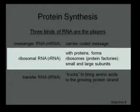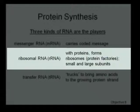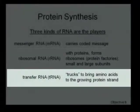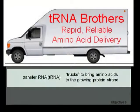Ribosomal RNA, or rRNA, gathers together with proteins to form macromolecular assemblies called ribosomes — those are little protein factories, and they have small and large subunits. And then there's transfer RNA, or tRNA. The way to remember this is that T is the first letter of truck, and transfer RNAs are the trucks that bring the amino acids to the growing protein strand — they bring in the raw materials for the protein being made.